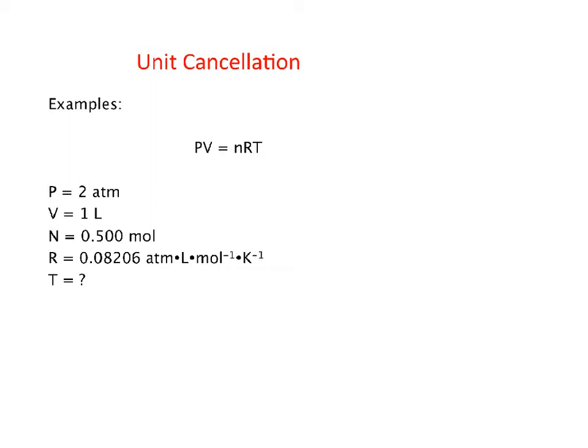The first thing you want to do in math problems with chemistry is you want to isolate the variable. So what that means is we want to rewrite the equation that we're given in order to have the variable that we want to solve for. I want to solve for T, so I need to get T by itself, so I'm going to divide both sides by N and R.